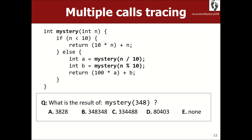Here's a mystery function that makes two recursive calls on itself. It has an if-else, and sometimes calls mystery twice. Let's figure out what it does. If you call mystery(348), n is not less than 10, so it goes to the else, calling mystery on n/10 and n mod 10. n/10 is 34 (everything except the last digit) and n mod 10 is 8 (just the last digit). The answer is 3, 3, 4, 4, 8, 8.